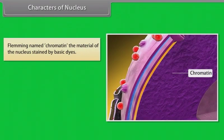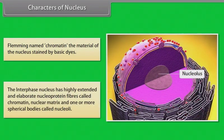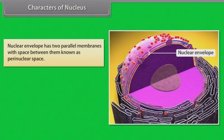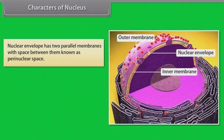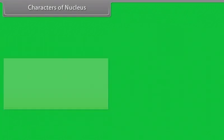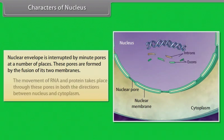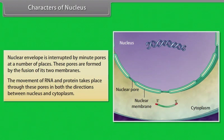Fleming named chromatin the material of the nucleus stained by basic dyes. The interphase nucleus has highly extended and elaborate nucleoprotein fiber called chromatin, nuclear matrix, and one or more spherical bodies called nucleoli. The nuclear envelope has two parallel membranes with the space between them known as the perinuclear space. The outer membrane is usually continuous with the endoplasmic reticulum, having ribosomes on it. The nuclear envelope is interrupted by minute pores at a number of places. These pores are formed by the fusion of its two membranes, and the movement of RNA and protein takes place through these pores in both directions between the nucleus and the cytoplasm.